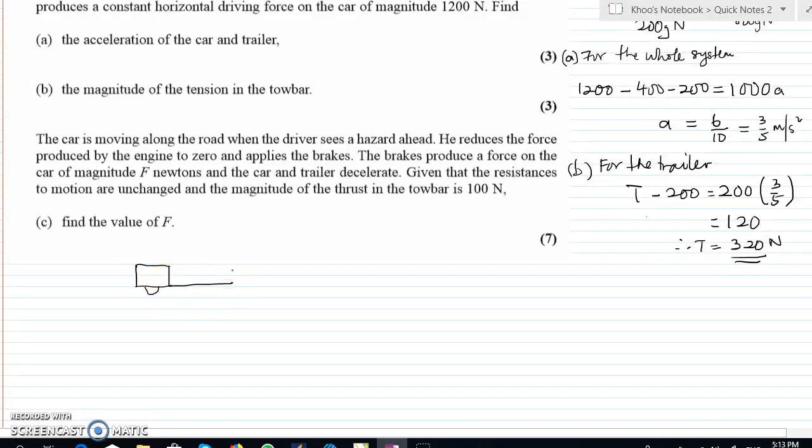Okay. So the vital information is 400 N is still the resistance, and 200 N is the resistance for the trailer. And of course the mass, the weight is still 200g N, or 200g N, and the weight for the car is 800g N.